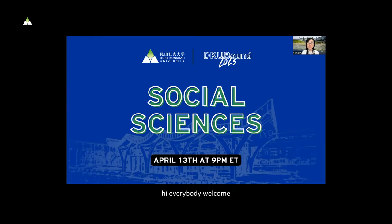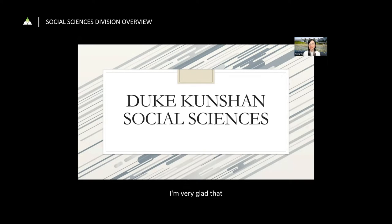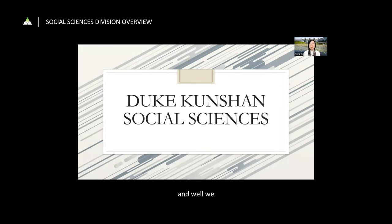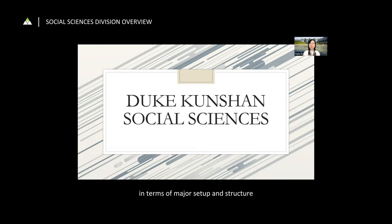Hi everybody, welcome. Can you hear me fine? I'm going to share my screen. I'm here today representing the Social Science Division at Duke Kunshan University. I'm very glad you all have an interest in the social sciences. DKU doesn't have departments — we have three divisions: social sciences, natural sciences, and arts and humanities. Because our divisions overlap with each other in terms of major setup and structure, you'll also hear about some other divisions in this presentation.